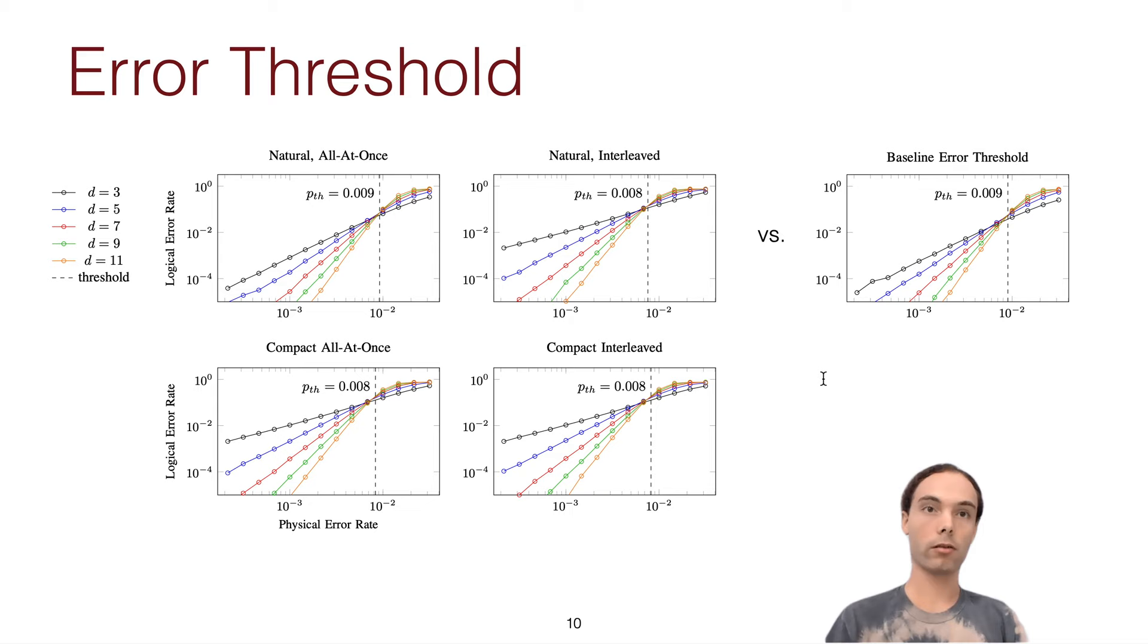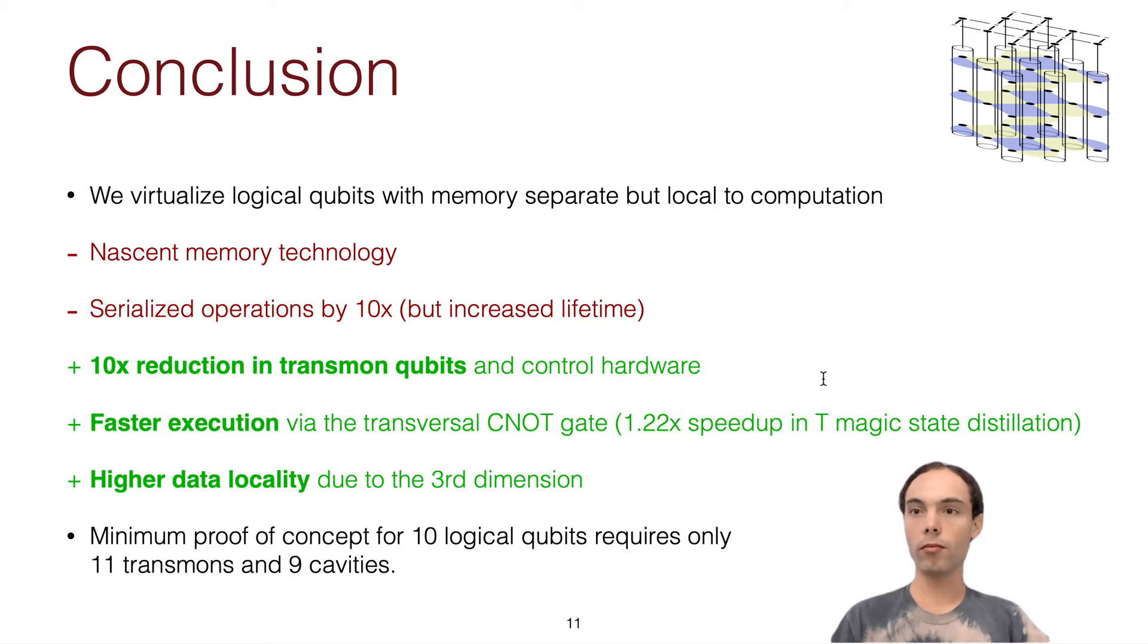So in conclusion, realizable quantum error correction protocols are a critical step in the path towards fault tolerant quantum computation. So we set out to exploit this memory in a 2.5D architecture, and we showed that we get a compact scalable architecture and also get some nice extra benefits in terms of speed and data locality from that.